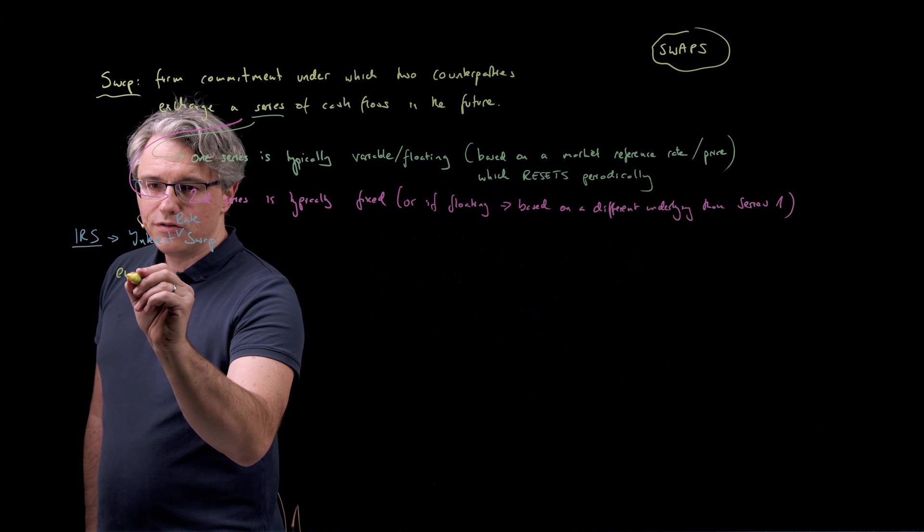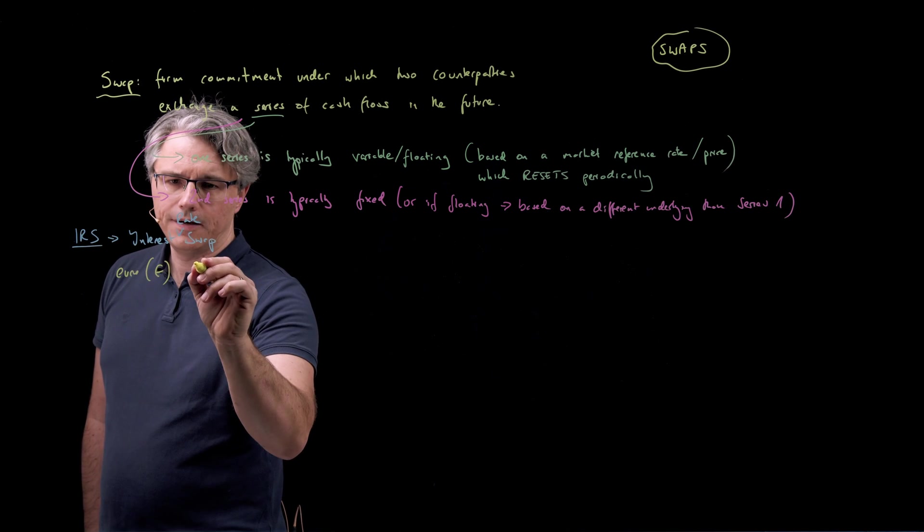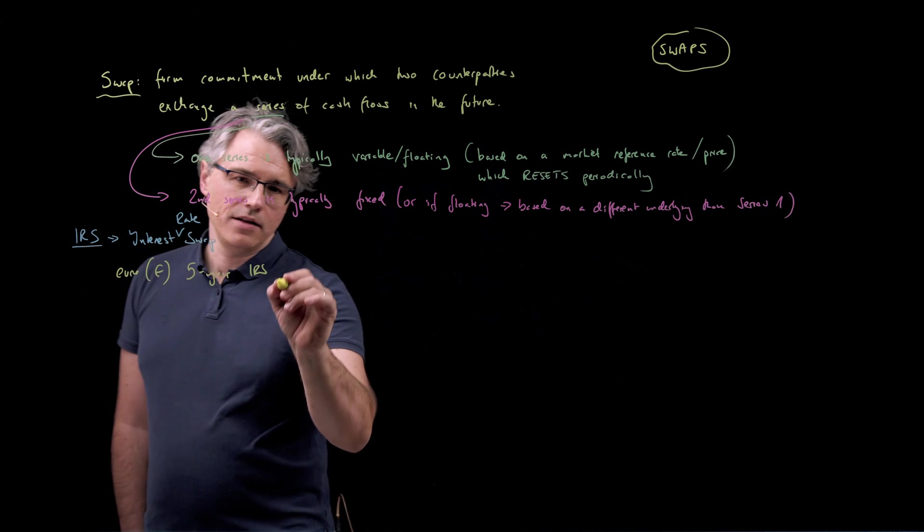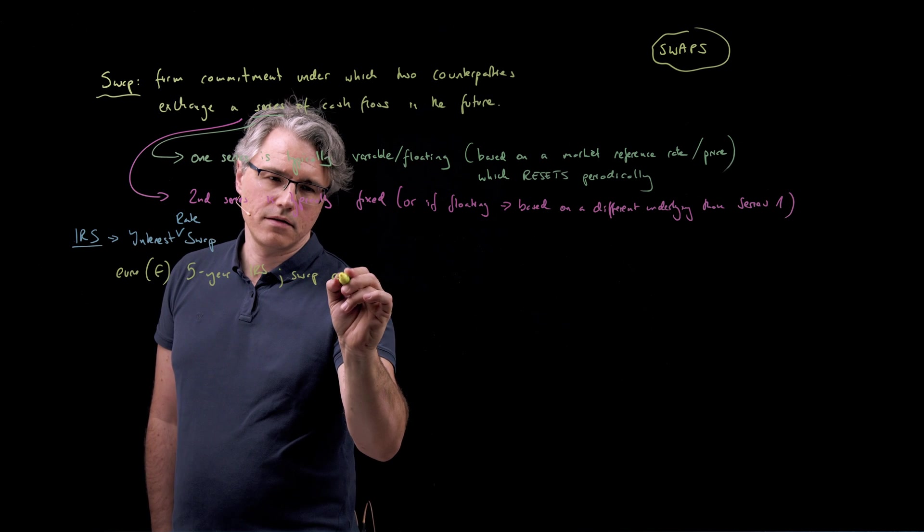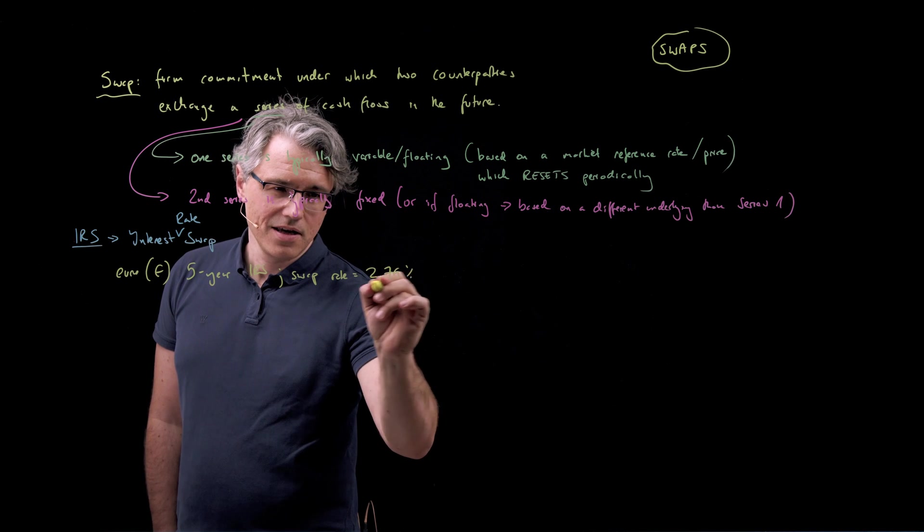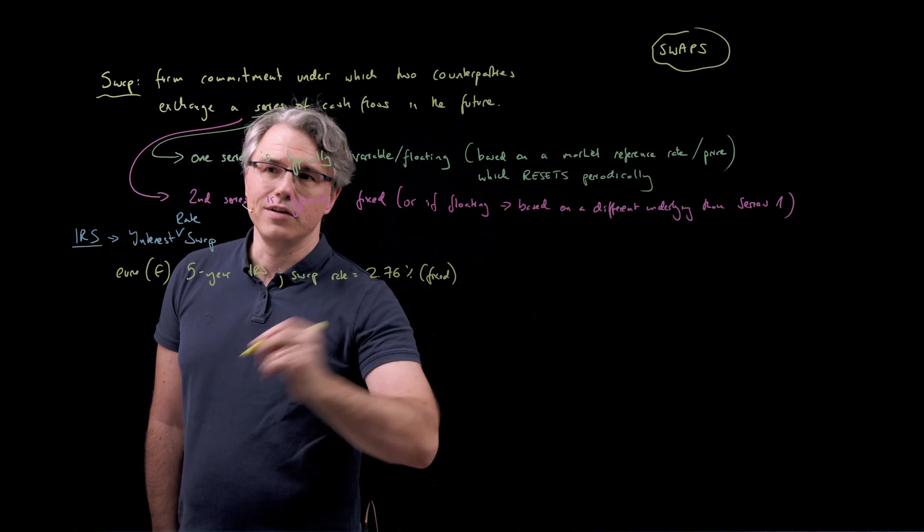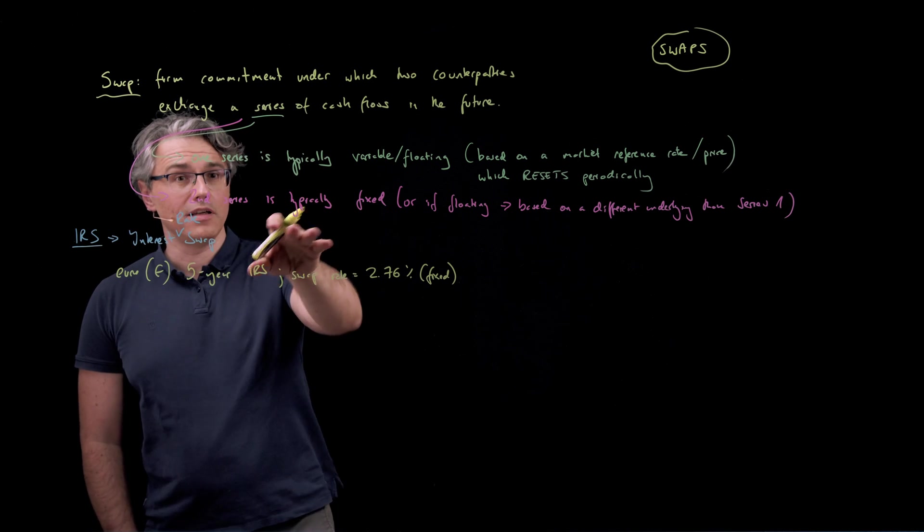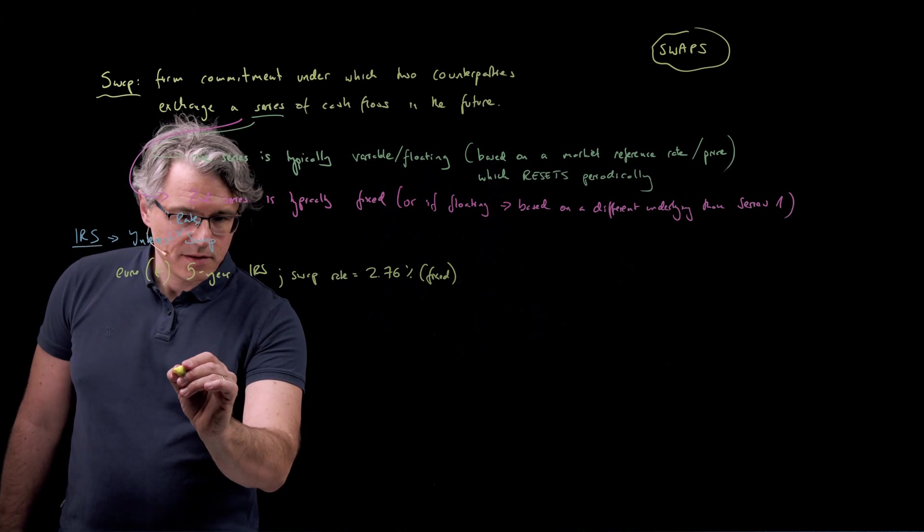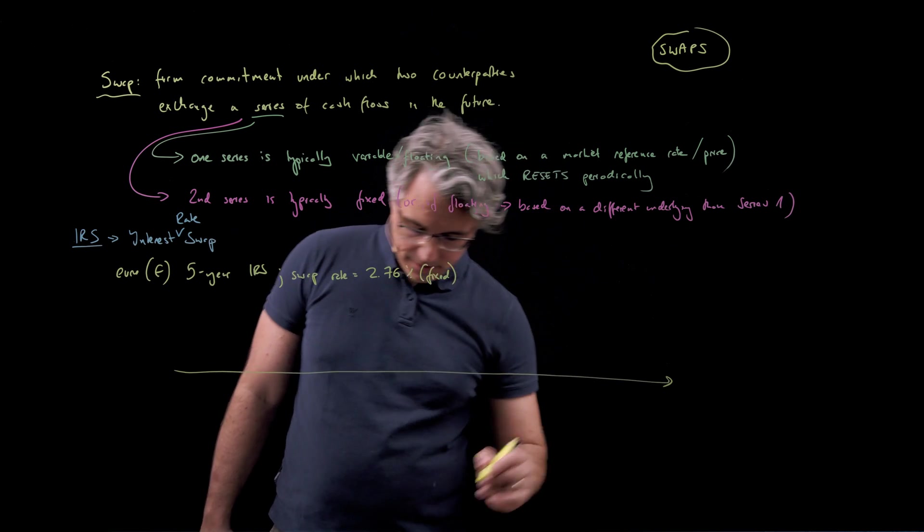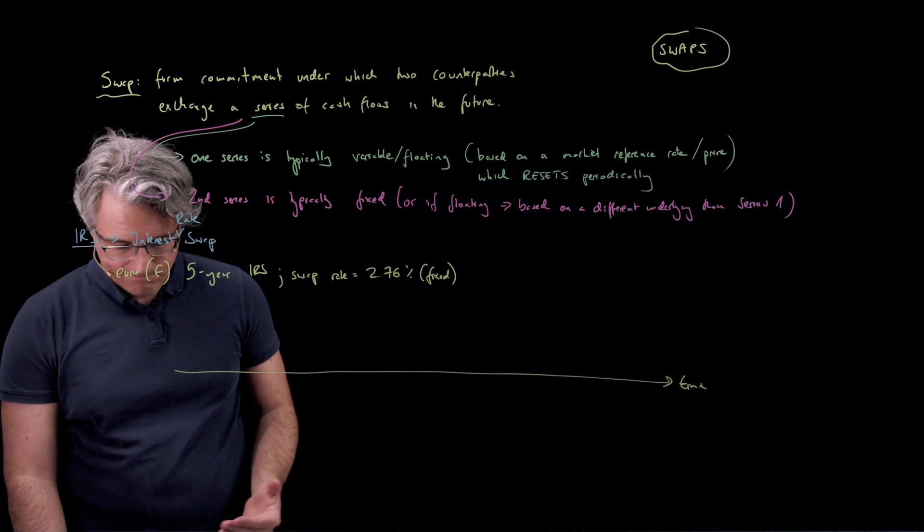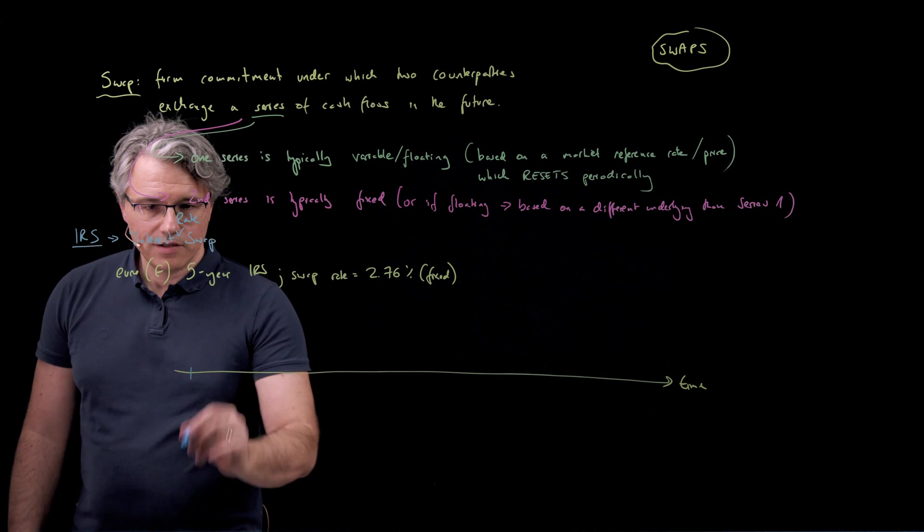This is going to be a euro, meaning the euro currency, let's say five-year interest rate swap. And the swap rate is going to be 2.76%. And this is going to be a fixed rate of interest that will feed into one of the series, the second series here. Now, as is typical, I'm going to draw an axis for time. On it, I'm going to represent the start date for the swap.